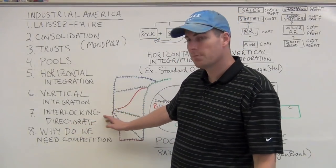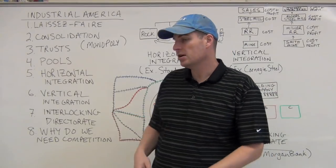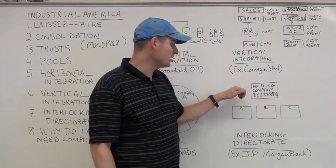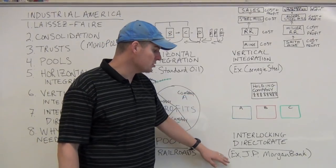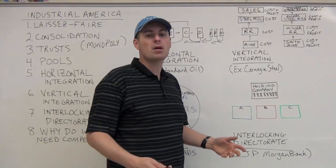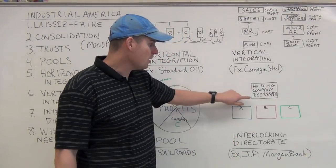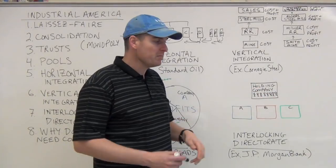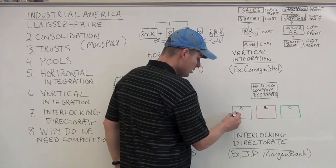The last major system for combinations and consolidation is the interlocking directorate. The way this works is essentially you have a holding company, and a holding company could be like a bank. Our example is J.P. Morgan's Bank. He was the preeminent banker of his day in the late 1800s and early 1900s. So he's got a board of directors for his bank.